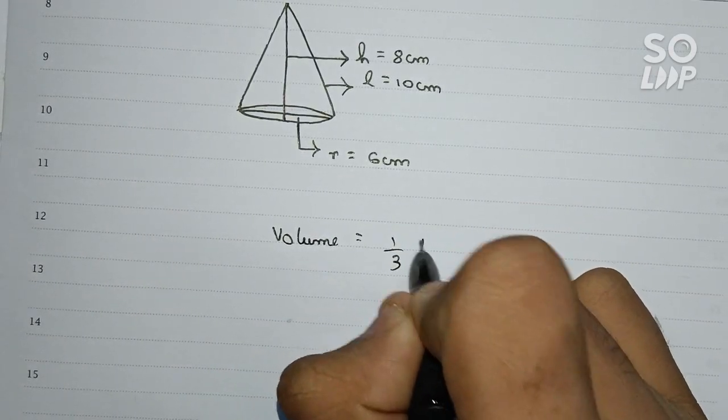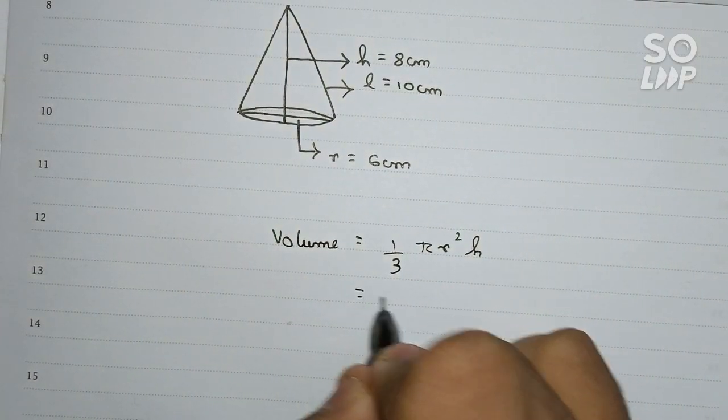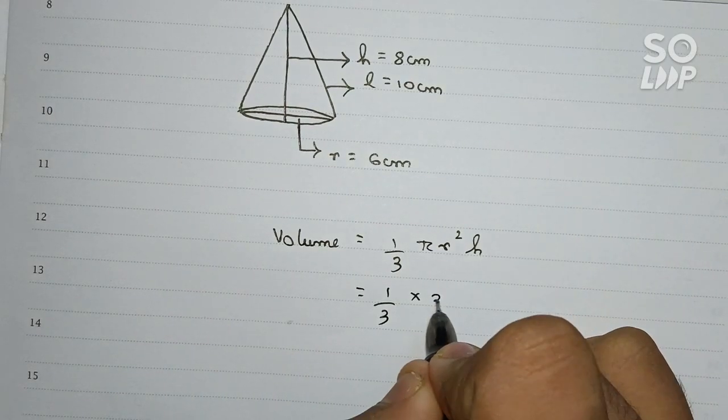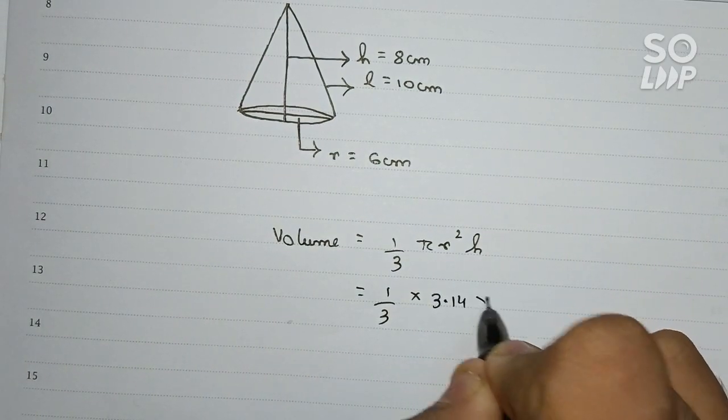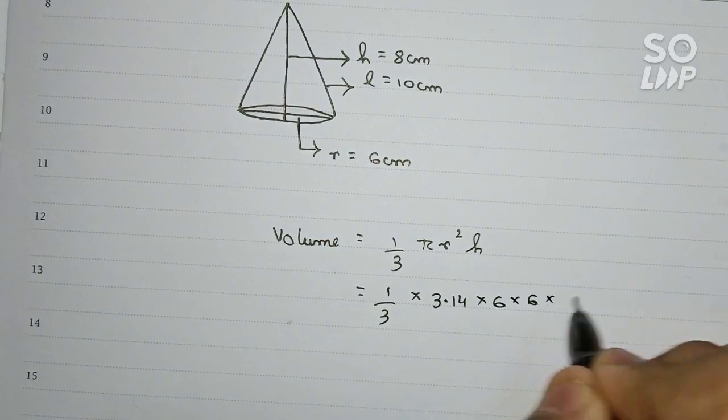So if you put down the values: 1/3 × π, we take as 3.14, × r is 6 × 6 × 8.